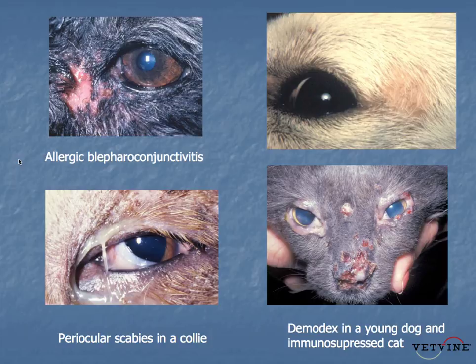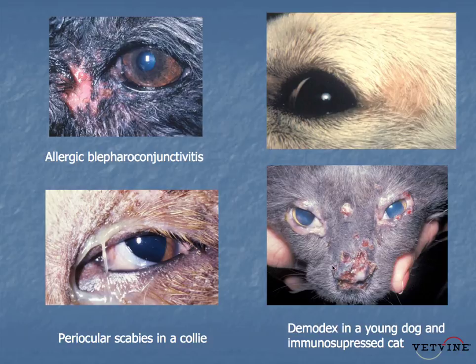Skin parasitic disease can involve the lids, generally as part of a widespread process. You can see a collie with scabies on the lower left, an immunosuppressed cat with demodex and the thickening ulcerated lesions of both the eyelids and the nose. And in the upper right, you can see a hyperemic and slightly alopecic area at the lateral canthus in that canine patient. Your routine diagnostic skin scrapings will give you the diagnosis on these — it's really a question of awareness of the possibility of pursuing these diagnoses.